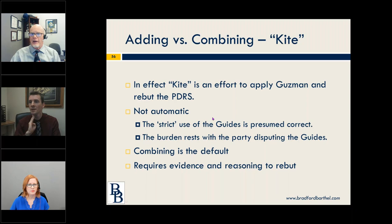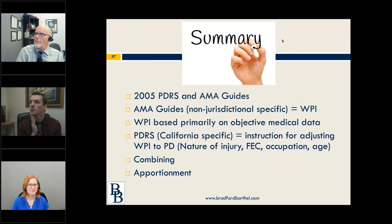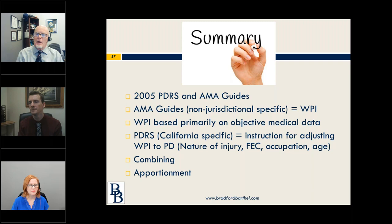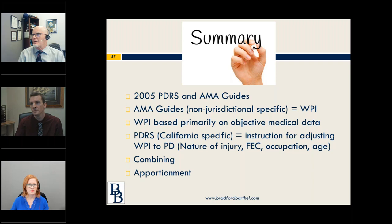A question about a pain add-on when the doctor adds an impairment for pain without identifying a specific body part: most DEU raters will take it and assign it to the body part that seems to make the most sense — perhaps the most significant injury. Some DEU raters will distribute it to multiple body parts, but most assign it to one. The option is to go back and ask the doctor, but the DEU will just rate it by assigning it to what makes the most sense.